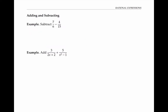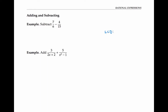Adding and subtracting fractions is a little more complicated, because we first have to find a common denominator. A common denominator is an expression that both denominators divide into. It's usually best to use the least common denominator, which is the smallest expression that both denominators divide into. In this example, if we just want a common denominator, we could use six times 15, which is 90, because both six and 15 divide evenly into 90.